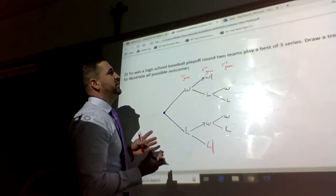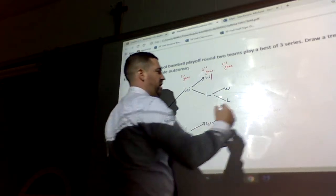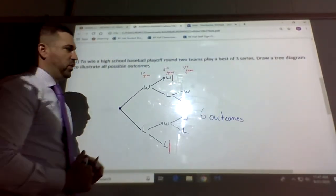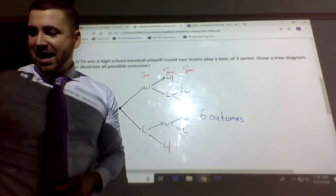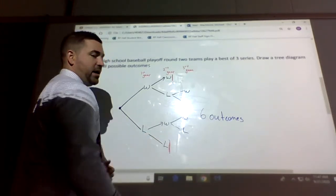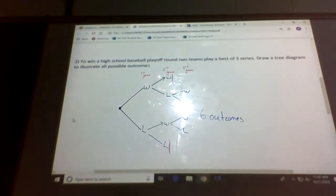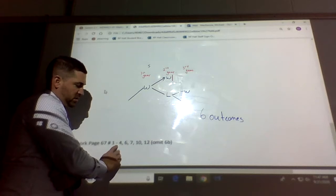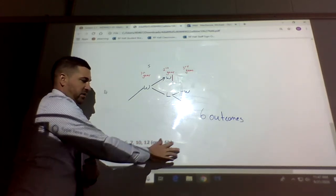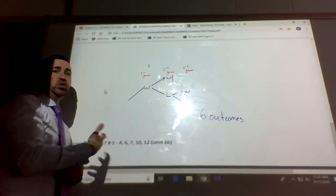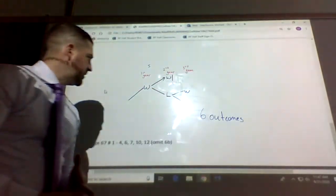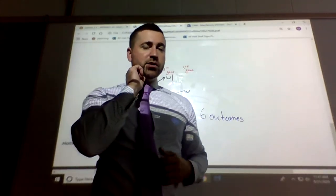There are six possible outcomes for this series. That is the whole lesson for 2.1 — super quick. For homework we're working on page 67, questions 1, 2, 3, 4, 6, 7, 10, and 12. Make a note: omit 6b, do not do 6b. That is all for the lesson and I'll catch up with you in the 2.2 video tomorrow.